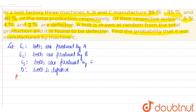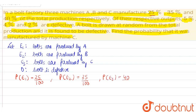First, we write down the probabilities of the given cases. Probability of event E1 is 25 percent, since A manufactures 25 percent, so that is 25 by 100. Similarly, probability of E2 is 35 percent and probability of E3 is 40 percent.